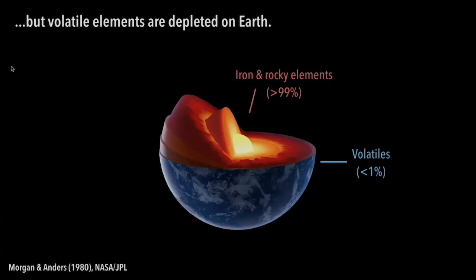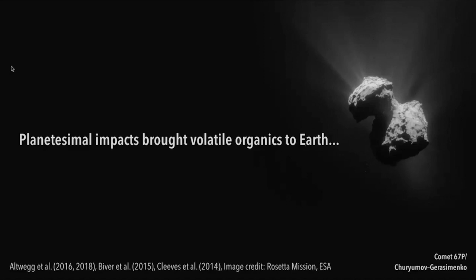So the question of how many of the exoplanets that we see would have access to these volatile elements in order to produce life, and whether we could expect to see life in these other systems, is something we're really interested in. What we think happened for Earth is that a lot of this veneer or shell of volatile species were brought through collisions with smaller bodies that also formed in the same protoplanetary disk from which Earth formed.